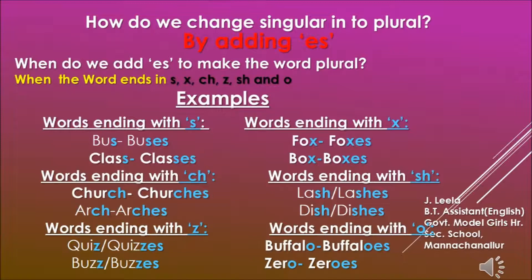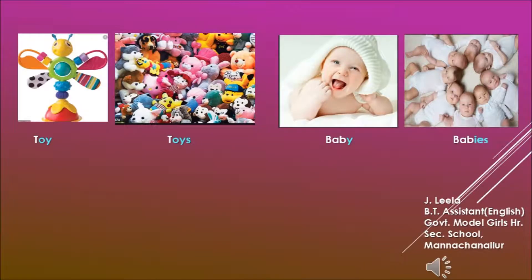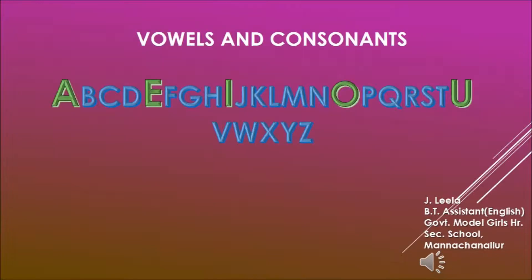Here is a new picture. We have the pictures of a toy, a baby, and their plurals. Now while the singular nouns toy and baby both end with the letter Y, their plurals end differently. While toy ends with S after Y, baby ends with IES — the Y in baby has disappeared. Now let's learn where to add S after Y and where to add IES in nouns like this. Before we learn that, tell me — what are vowels?